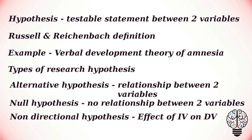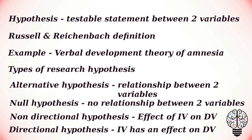A two-tailed non-directional hypothesis predicts that the independent variable will have an effect on the dependent variable, but the direction of the effect is not specified. For example, there will be a difference in how many numbers are correctly recalled by children and adults.